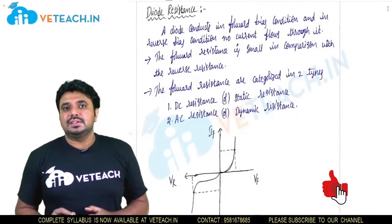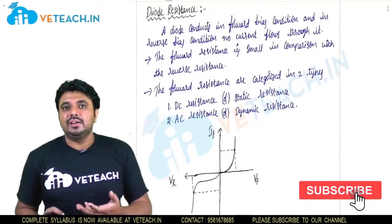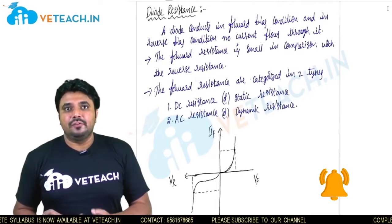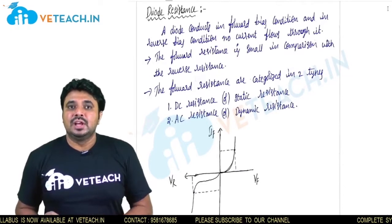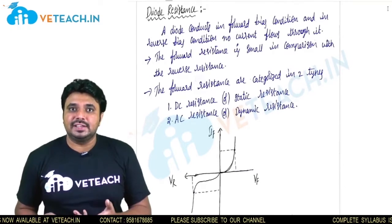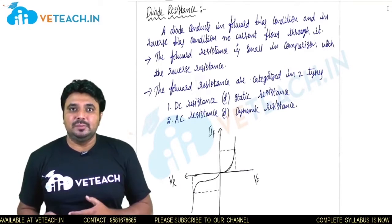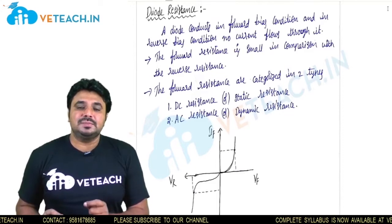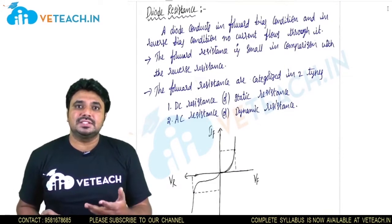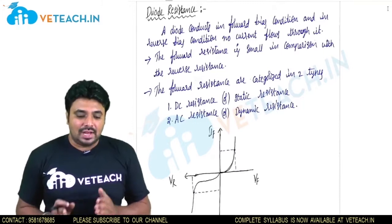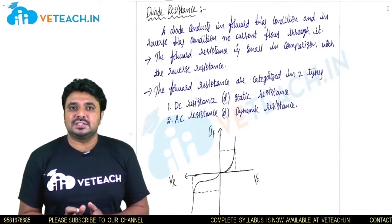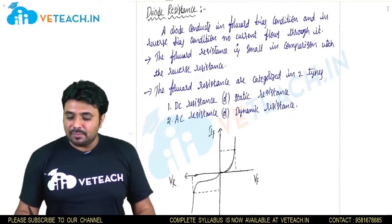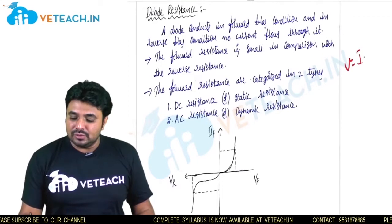Welcome to We Teach. In this section, I am going to discuss about diode resistance. Can we find the resistance in a diode? The answer is yes. We can find out two types of resistance in diodes: static resistance and dynamic resistance. The name 'dynamic' itself tells us that by changing the voltage and current, we can get some change in resistance. Static resistance is a fixed resistance which depends only on voltage and current.